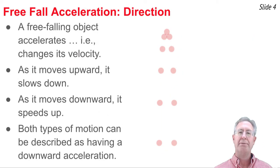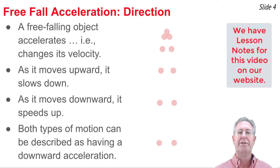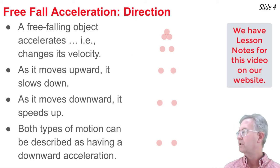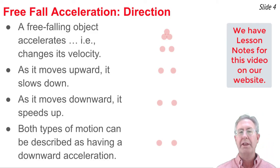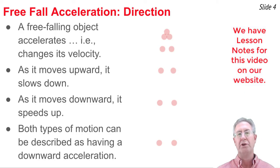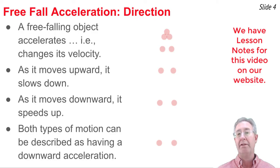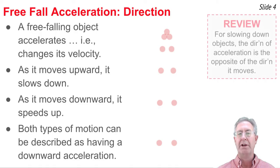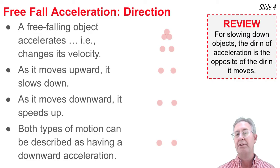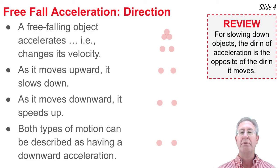A free falling object accelerates — that is, it changes its velocity. You can see by this dot diagram of an object thrown upwards that as it travels upwards it's slowing down. It reaches a highest position known as the peak, and as it falls it speeds up. Both the rising and slowing down, and the falling and speeding up, are described as a downwards acceleration. When an object slows down, the direction of acceleration is opposite to its motion; when it speeds up, acceleration is in the same direction.